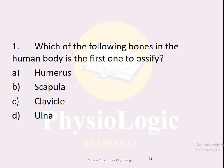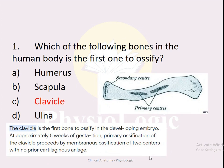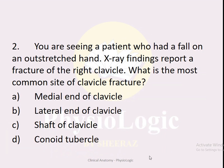MCQ number one: Which of the following bones in the human body is the first one to ossify? Option A: Humerus. Option B: Scapula. Option C: Clavicle. Option D: Ulna. The correct option is C — the clavicle is the first bone to ossify in the human body.